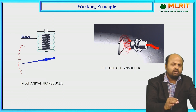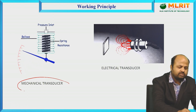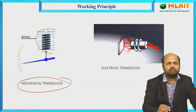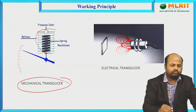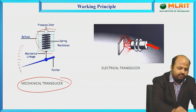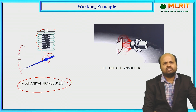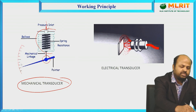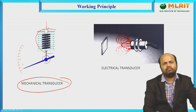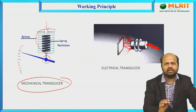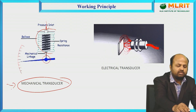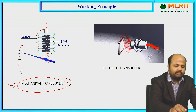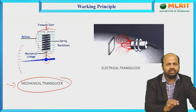Here we will see one example of a mechanical transducer and how it works. A mechanical transducer consists of a gauge in which some springs are connected. Whenever pressure is given to the spring, the needle moves automatically on the scale. So force or pressure, which is a physical quantity, is being changed to displacement. The input is pressure and the output is the mechanical displacement of a needle.